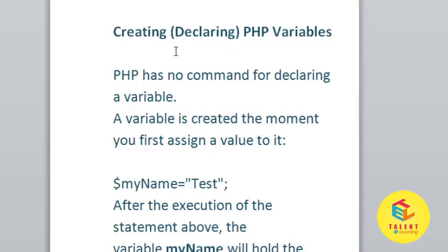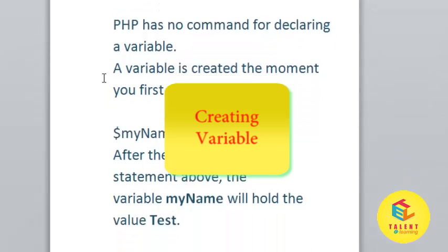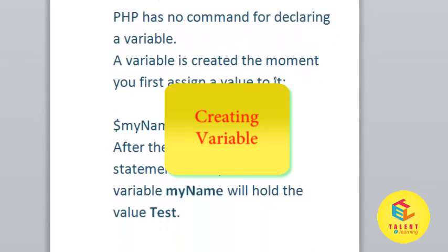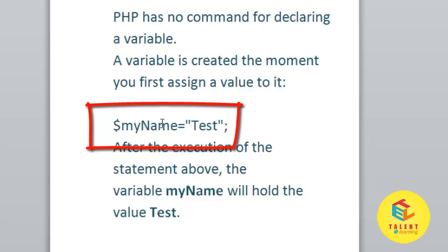Now, creating or declaring PHP variables. In PHP, declaring a variable and assigning a value to it are the same process. A variable is created the moment you first assign a value to it. After the execution of that statement, the variable $myname will hold the value 'test'.